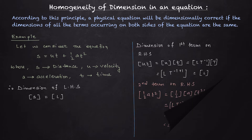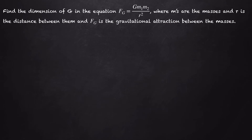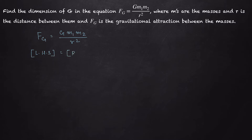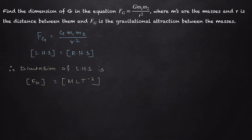Now let's solve this problem: find the dimension of G in the equation F_G = G·m₁·m₂ / r², where m's are the masses, r is the distance between them, and F_G is the gravitational attraction between the masses — Newton's gravitational formula. From homogeneity of the dimensional equation, the dimension of the left-hand side must equal the dimension of the right-hand side. The dimension of force is MLT⁻².